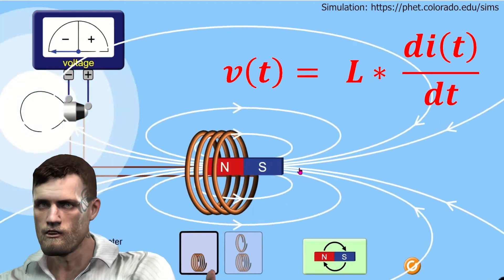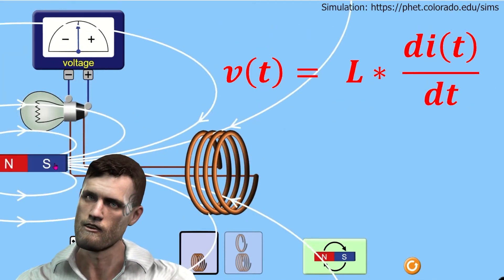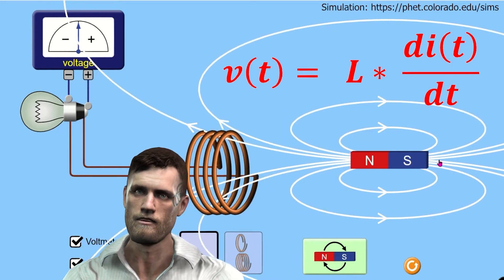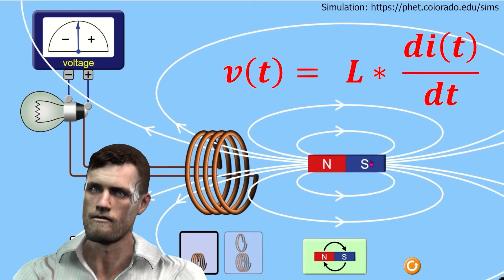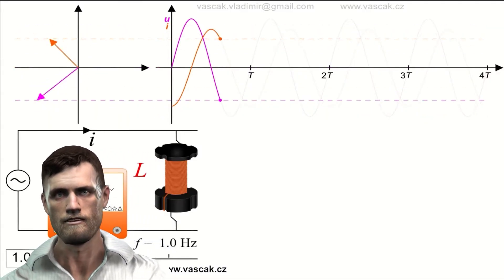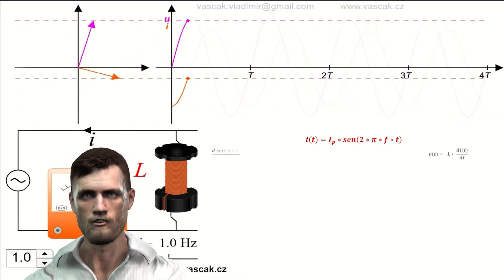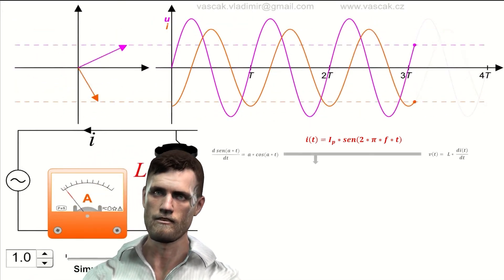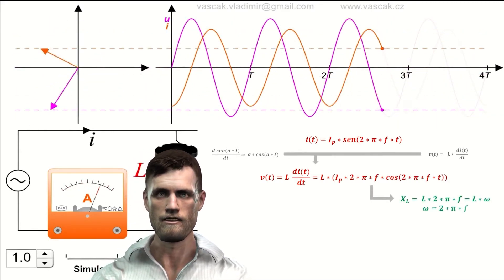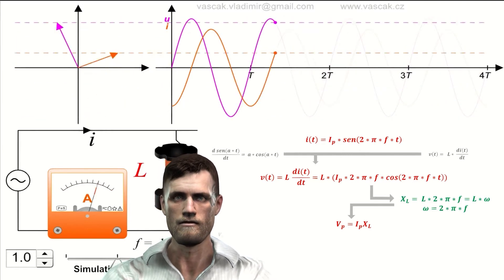The voltage at the inductor terminals is equal to the inductance multiplied by the rate of change of the current with respect to time. If the current is constant — for example if we feed the coil with a battery — after the first instant the rate of change of the current will be zero, and therefore the coil terminals will have zero volts, meaning it behaves as a short circuit. If we consider a sinusoidal current in the coil and apply a simple derivation, we can obtain the voltage waveform and define a new parameter called inductive reactance, X_L, which simplifies the expression for the peak values.